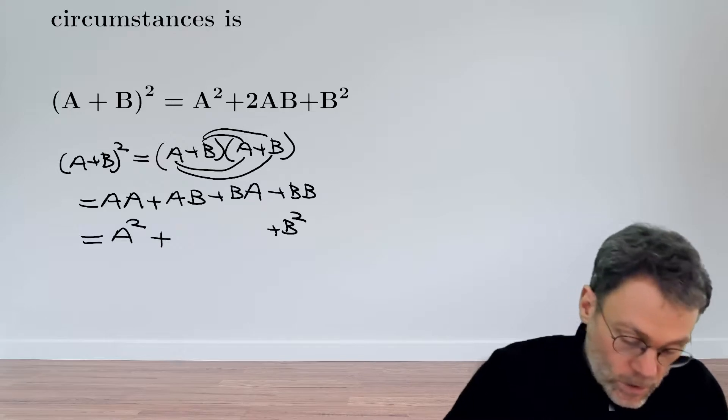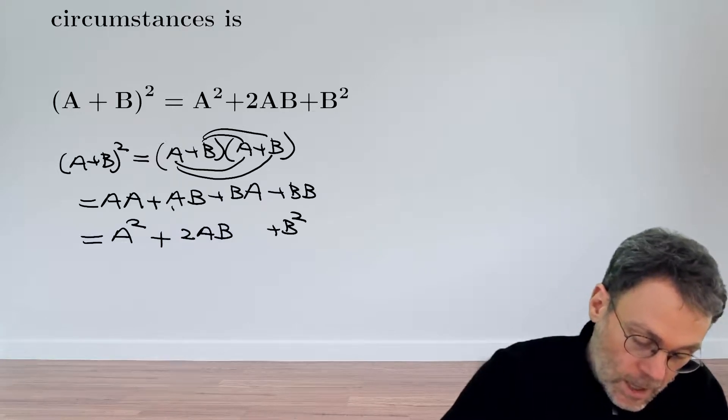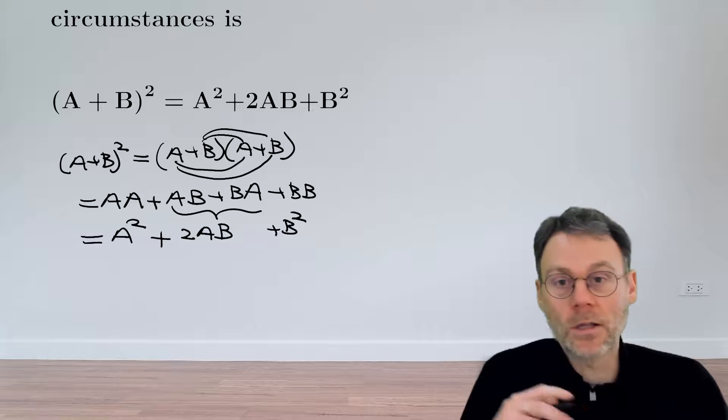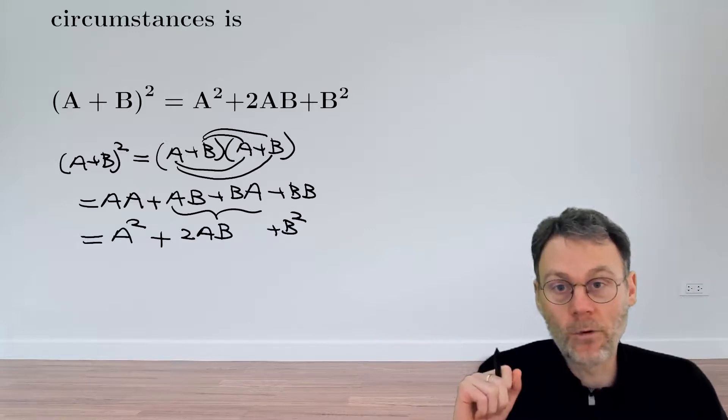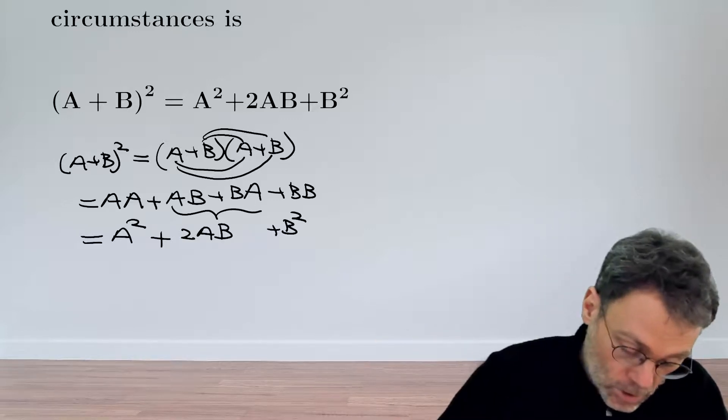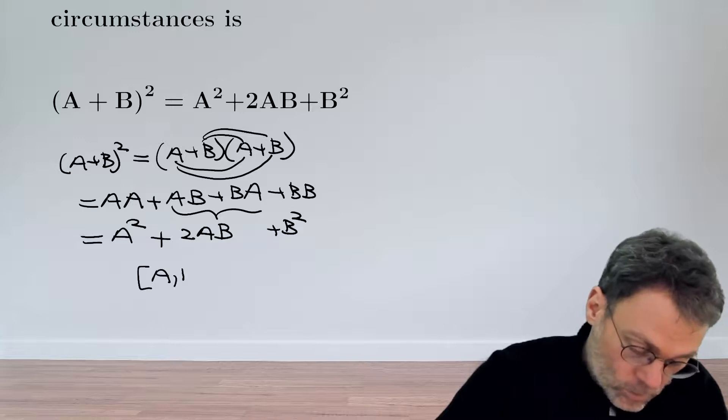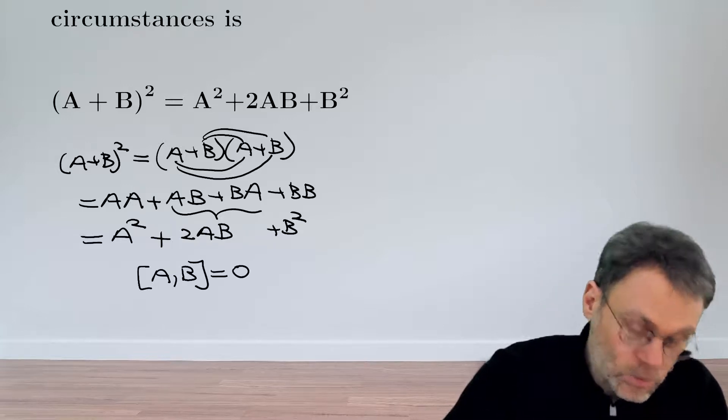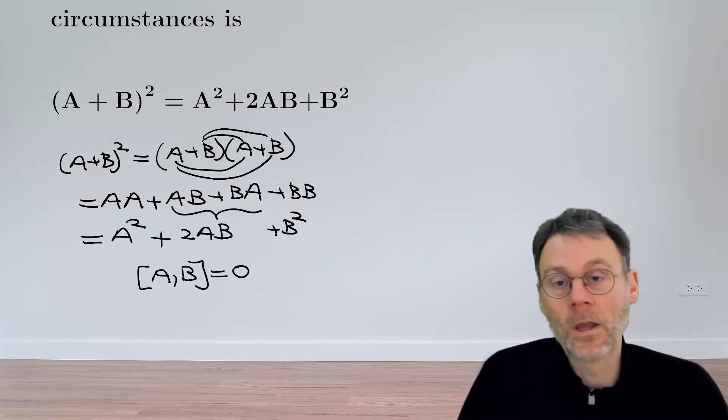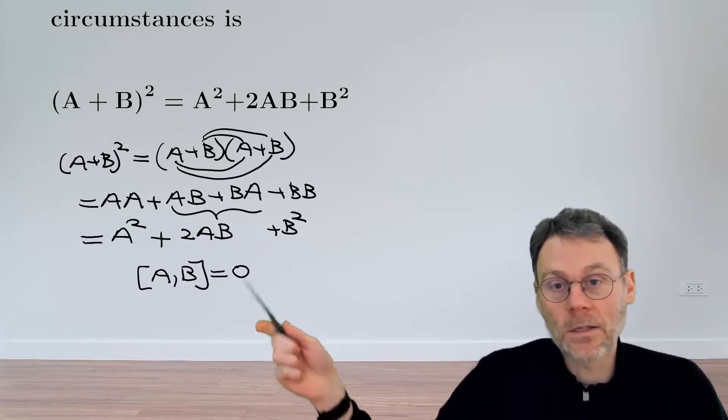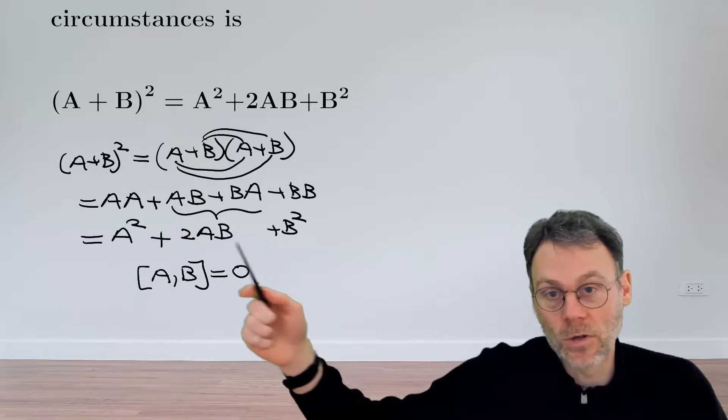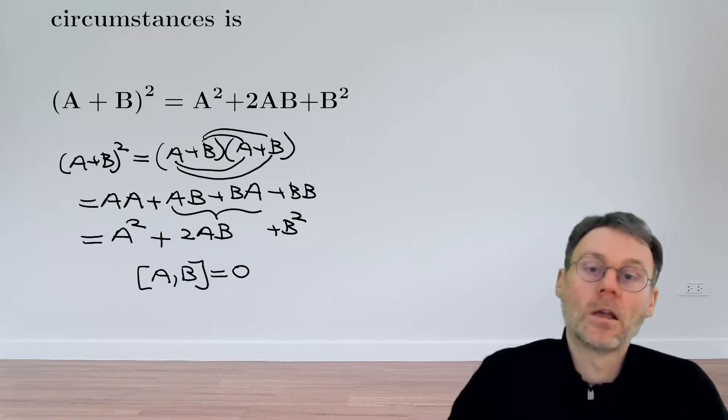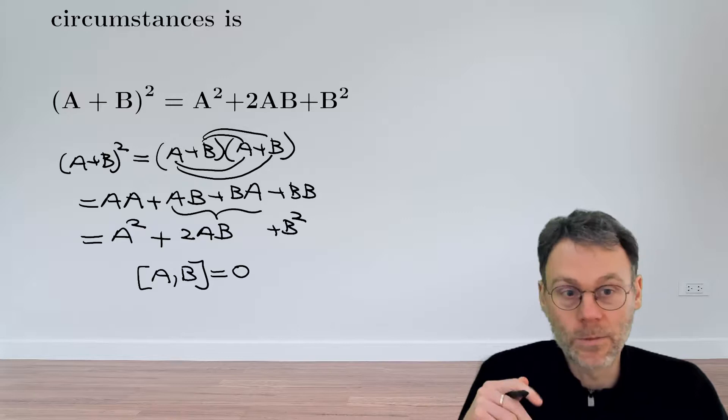But we can only write that this equals 2AB if the order in which you apply these operators doesn't matter. To put it more formally, the commutator between these two operators must be zero: [A,B] = 0. Only then can you simplify this expression to the familiar result (A + B)² = A² + 2AB + B².